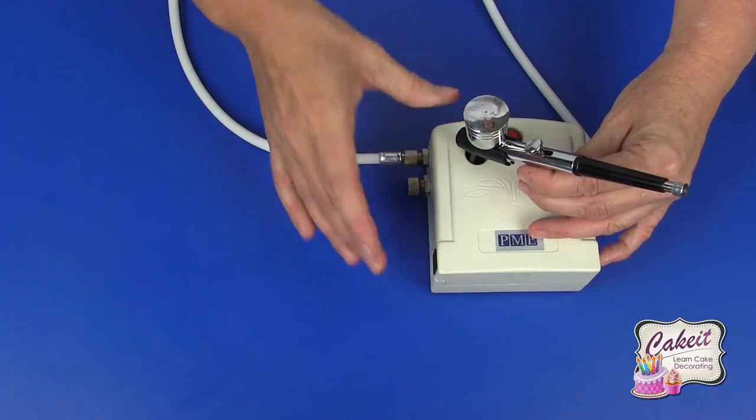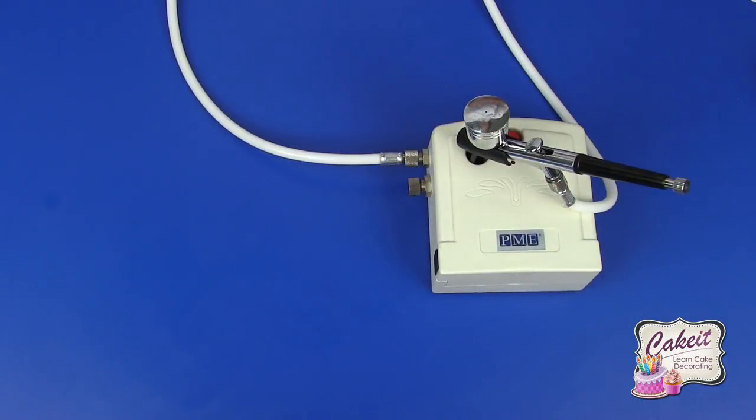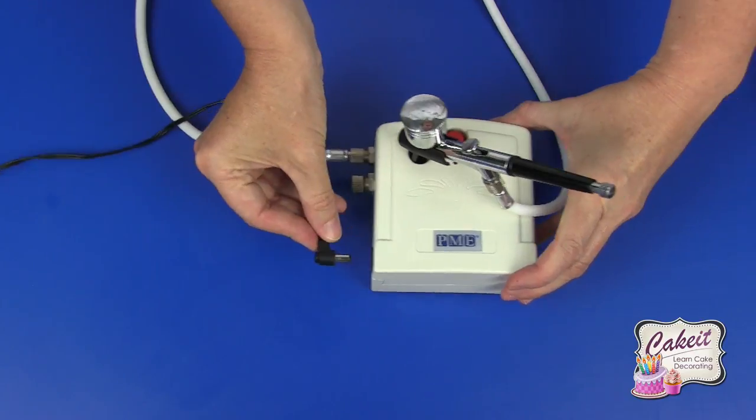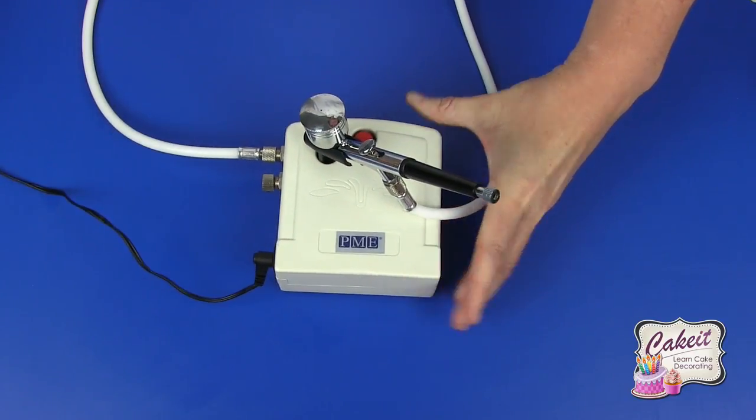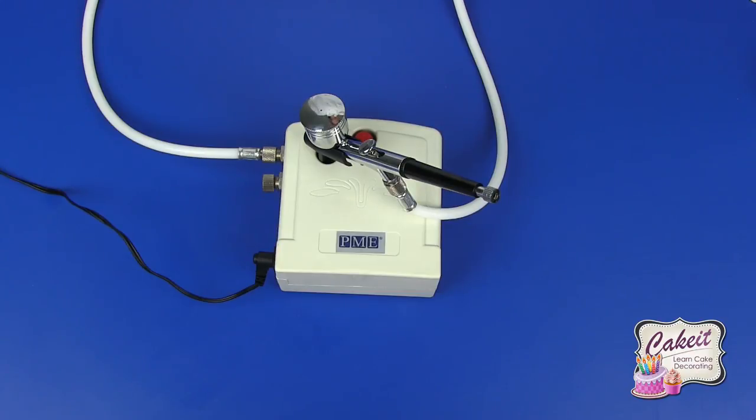And then we're ready to insert the power plug into the recess. And that concludes how to put together the airbrush and compressor kit.